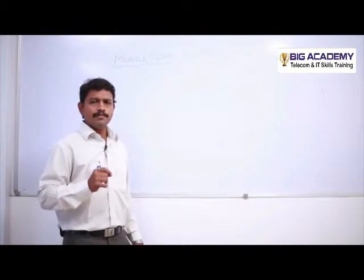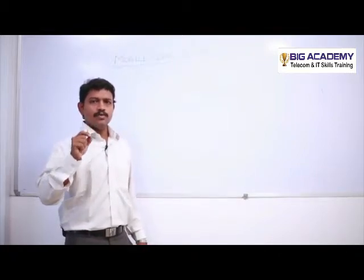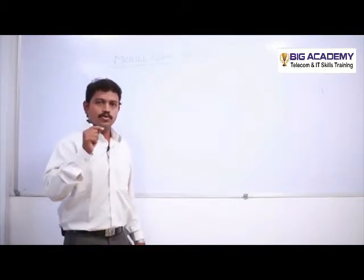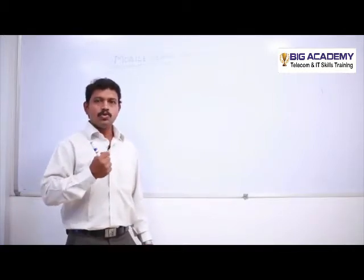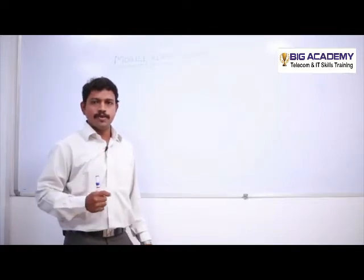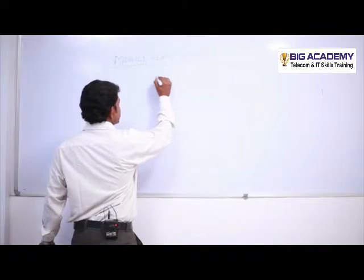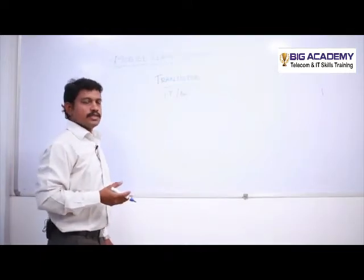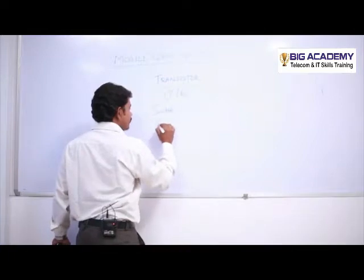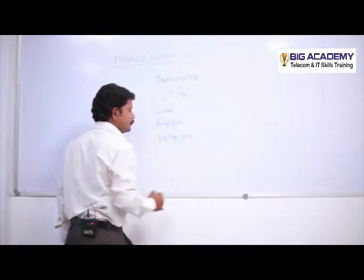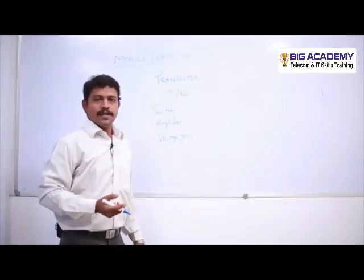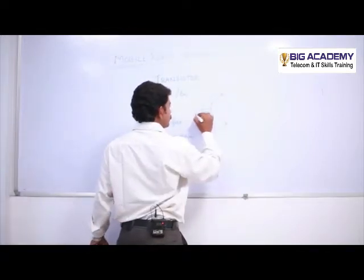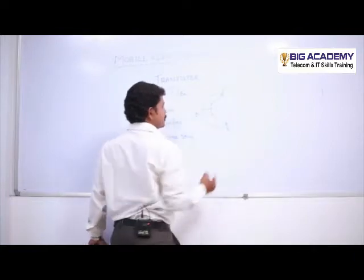For example, when you press the power button to switch on the mobile, the voltage between the two points is measured in the range of 1.5 to 2.5 volts. This involves transistors and diodes. The transistor acts as a switch, as an amplifier, and as a voltage gate — these are some of the key applications of a transistor. The transistor has three terminals: base, emitter, and collector.